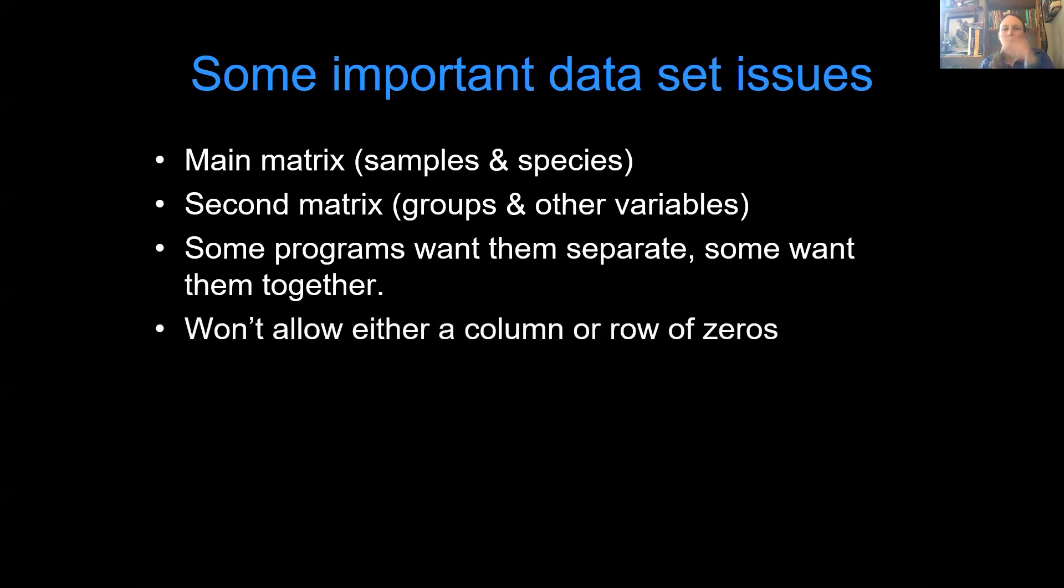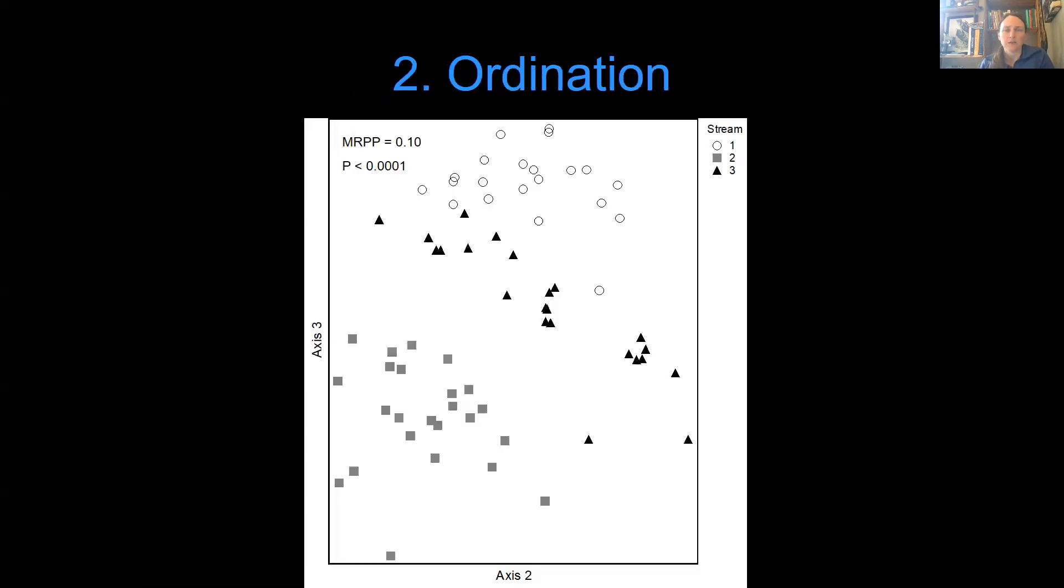Most programs won't allow either an entire column of zeros or an entire row of zeros. So if you go to a plot and there's nothing there, then you can't have just zeros all the way across. You might have to maybe make a new column that says nothing and give it a one for that column. And all of your empty cells must be labeled as zero.